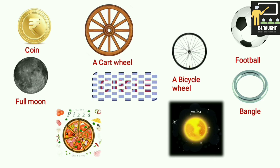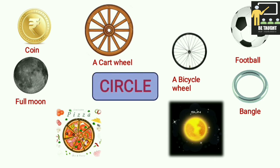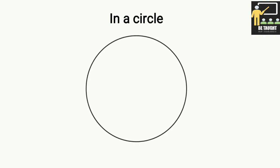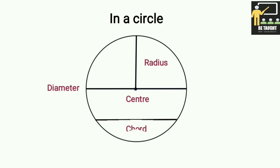Now we shall learn about circles. If you see here in the picture, we have different objects which are in circular format — like a coin, a cartwheel, a bicycle wheel, a football, a bangle, the Sun, a full moon, and many more. In a circle, there are different parts: center, radius, diameter, and chord.